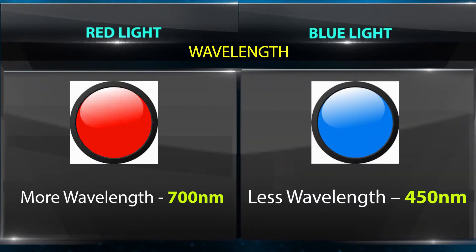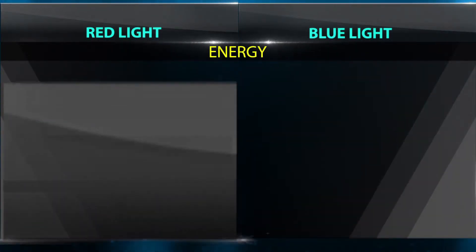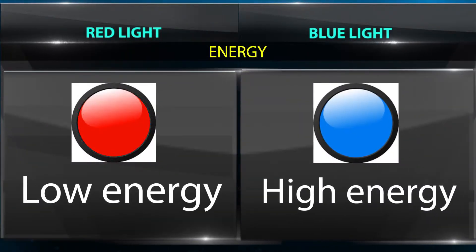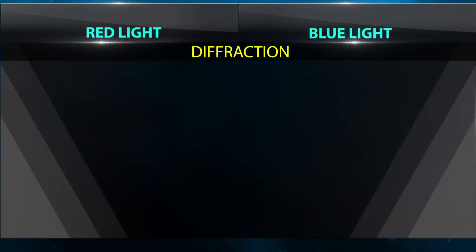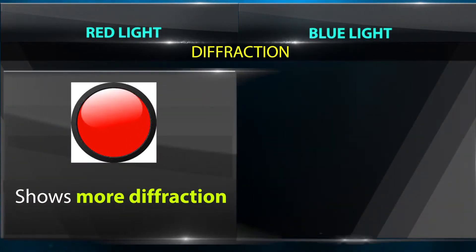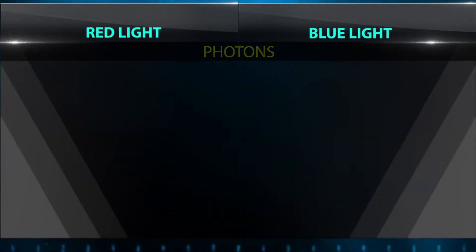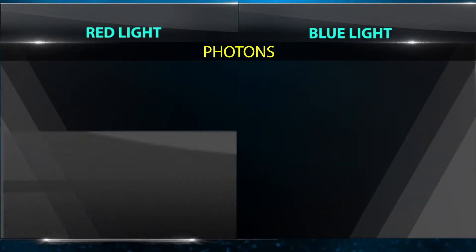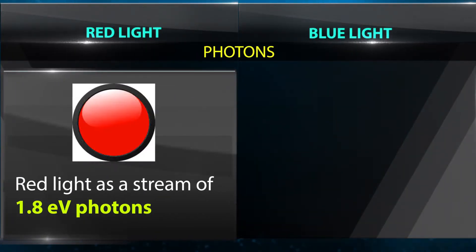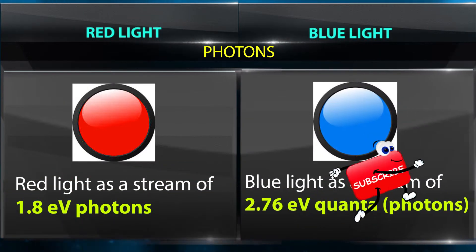Blue light has less wavelength, approximately 450 nanometers. Red light has low energy whereas blue light has high energy. Diffraction — red shows more diffraction, blue shows less diffraction. In terms of photons, red light is a stream of 1.8 electron volt photons, while blue light is a stream of 2.76 electron volt photons.